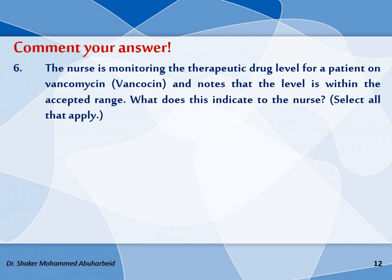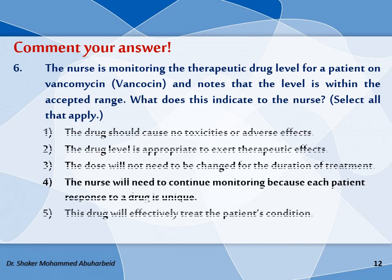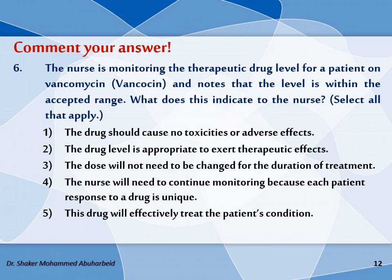Please comment your answer. The question is: the nurse is monitoring the therapeutic drug level for a patient on vancomycin — a type of antibiotic — and notes that the level is within the accepted range. What does this indicate to the nurse? There is more than one answer; please select all that apply. The first option: the drug should cause no toxicity or adverse effects. Second option: the drug level is appropriate to achieve therapeutic effects. Third option: the dose will not need to be changed for the duration of treatment. Fourth option: the nurse will need to continue monitoring because each patient's response to a drug is unique. And the last option: the drug will effectively treat the patient's condition. Please share your comments.